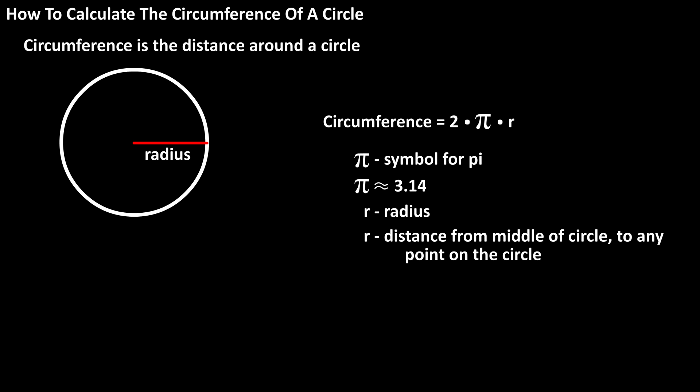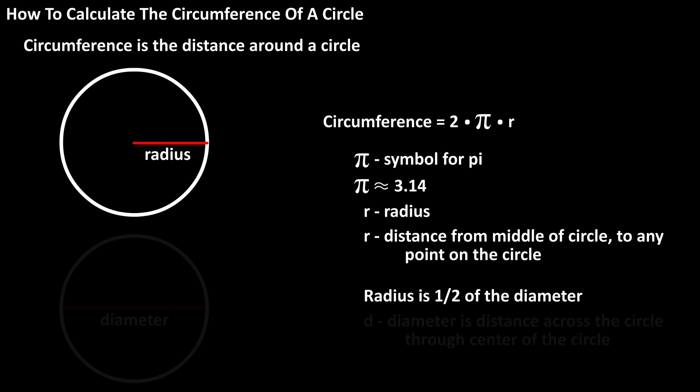r represents the radius of the circle, which is the distance from the middle of the circle to any point on the circle. The radius is one half of the diameter. The diameter is the distance across the circle through the center of the circle.